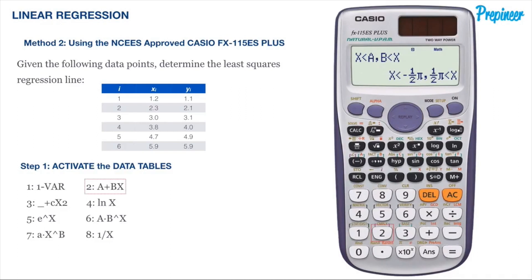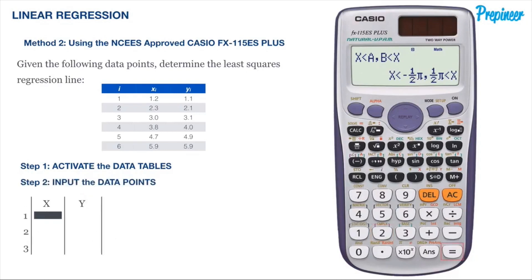Here you will press 2 to select option 2 for a plus bx. We now want to input all the data points. The x column is where all the x values will be input, and the y column is where all the y values will be input. Start with the first x data point, which is 1.2, and input that into your calculator.